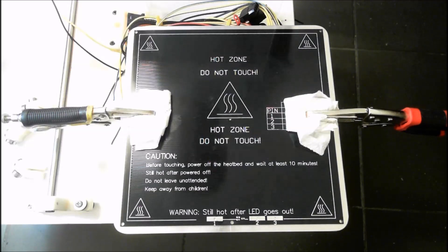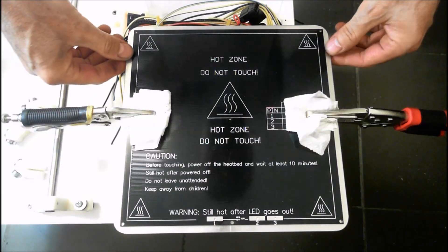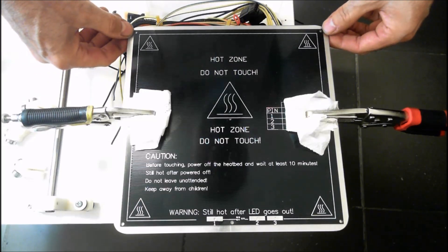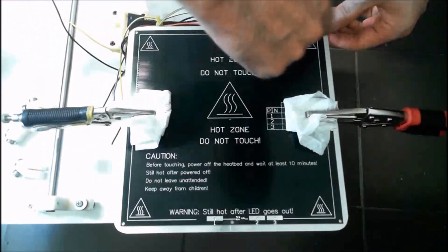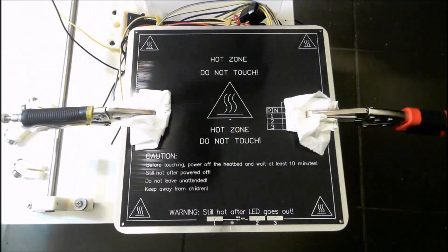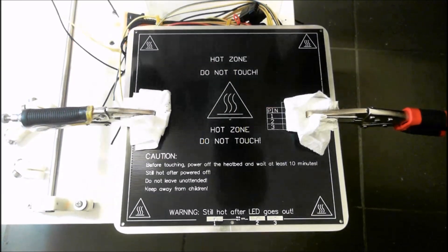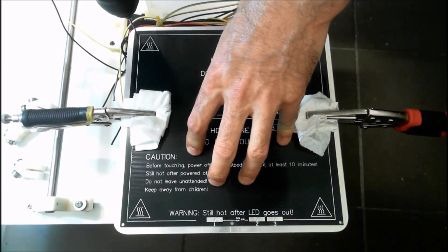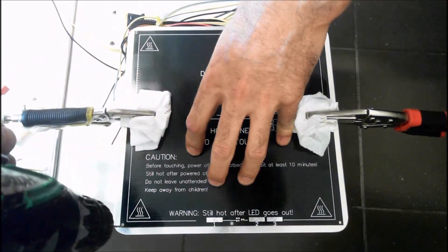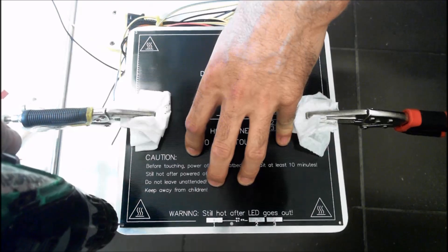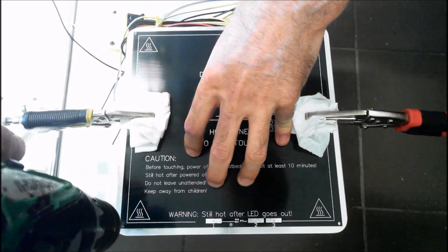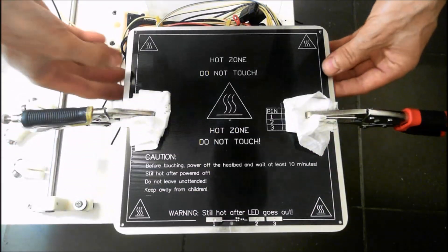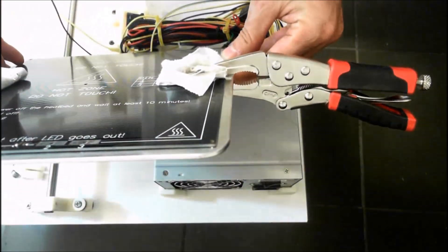We've lined our heat bed up approximately in the middle of it, and we're just going to mark the four corners with a two millimeter drill bit. We're clamping the heat bed to the aluminum with a bit of paper on top to protect the heat bed and some small vice grips.